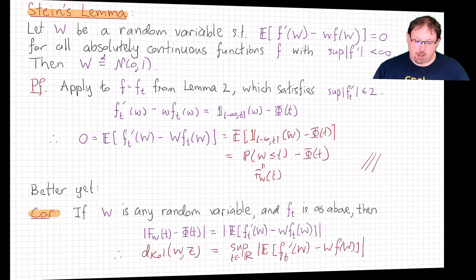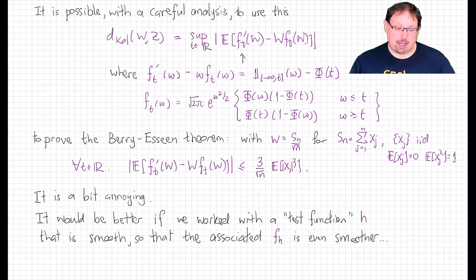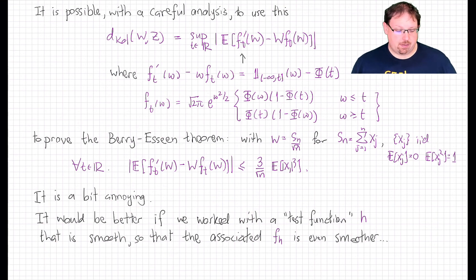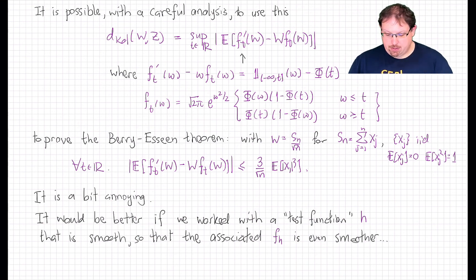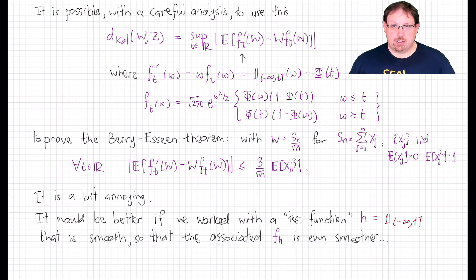This is indeed possible and gives one nice route to proving the Berry-Esseen theorem. However, we're not going to go down that road. The main reason is that this function f_T has a kink at t — it is not a smooth function, which makes this proof a bit annoying. It is possible to carry it through, but it takes more work than the Taylor's theorem approach using characteristic functions to prove a non-quantitative central limit theorem. It would have been better if we could have worked with a smooth function here, and that would have worked if the test function — in this case the indicator of the interval from minus infinity up to t — was continuous. That function is discontinuous, which results in the kink in f_T.